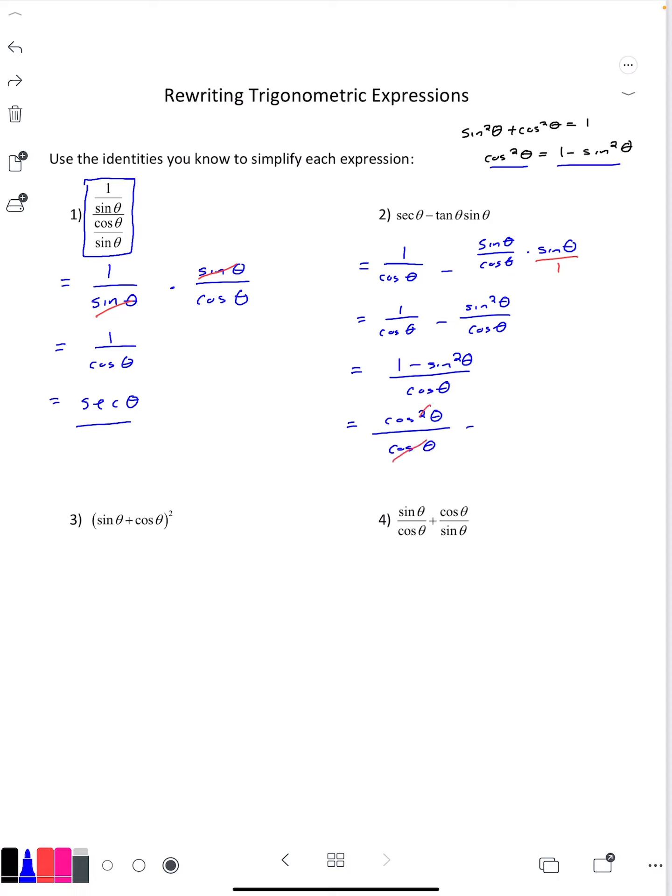Finally, one of the cosines can cancel and the final simplified answer is just cosine theta.